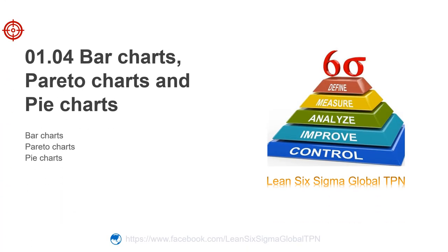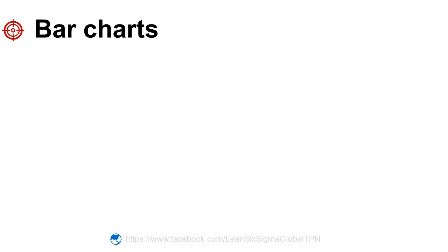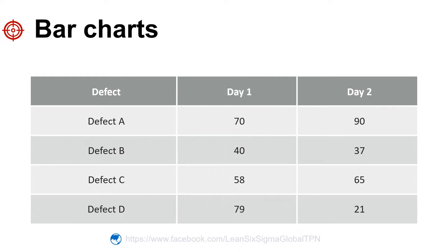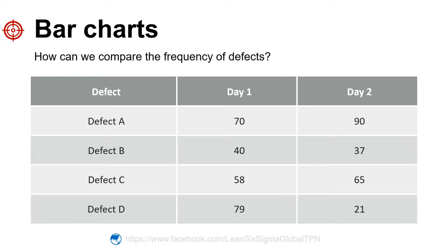Hello friends. We've talked about bar charts, Pareto charts, and pie charts. We want to compare the number of defects in day one and day two for defect types A, B, C, and D — defects that occurred in both days. So how can we compare the frequency of defects?